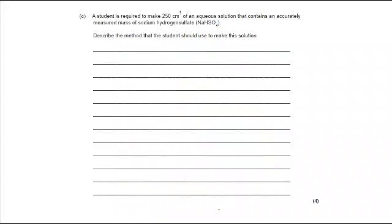Part C. A student is required to make 250 centimeter cubed of an aqueous solution that contains an accurately measured mass of sodium hydrogen sulfate. Describe the method that the student should use to make this solution. Four marks. Quite a lot that you need to think about here, but you need to be familiar with this process.